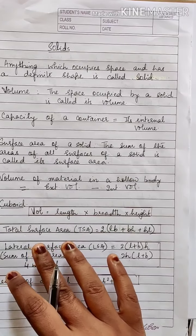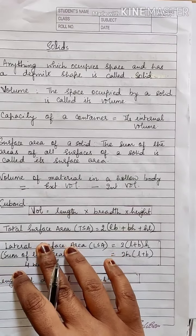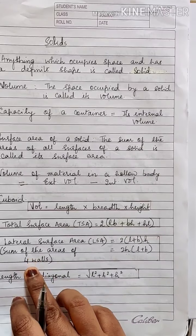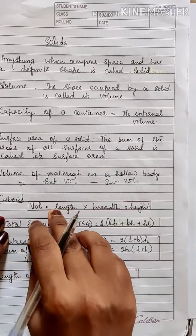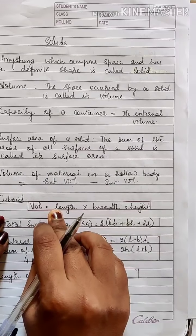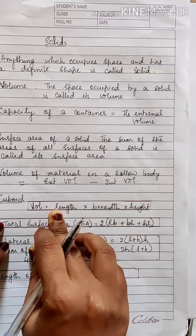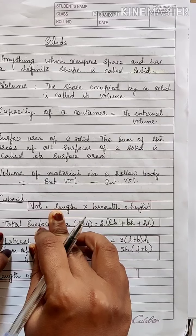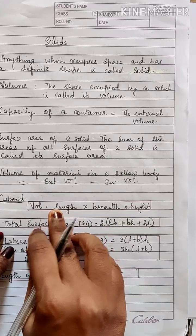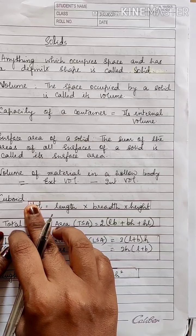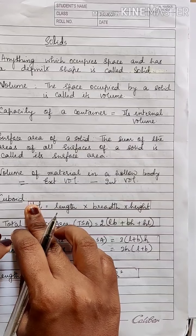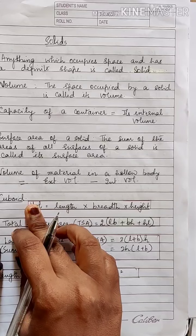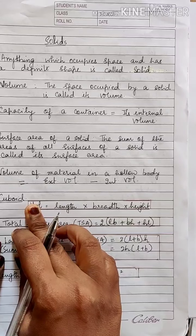In this class we will learn about two solids: cuboid and cube. The base of the cuboid is always a rectangle and the base of a cube is always a square. In a cuboid, the length, breadth and height will be different, whereas in a cube, length, breadth and height will be equal.